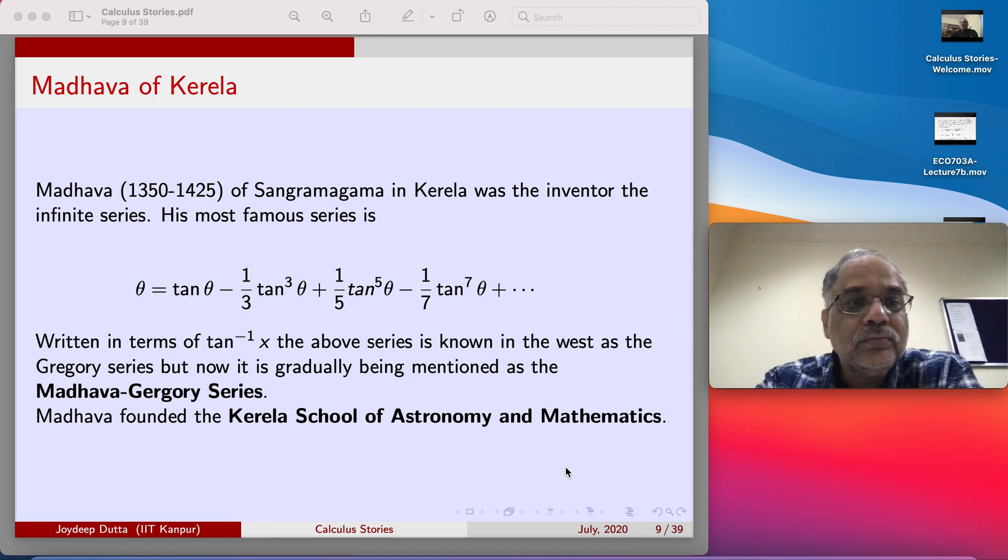Now written in terms of tan inverse, this would be the Gregory series. But Gregory series is quite intuitive to figure out because you know integral dx by 1 plus x square, that is tan inverse x, that you know already. We have used it in the last lecture.